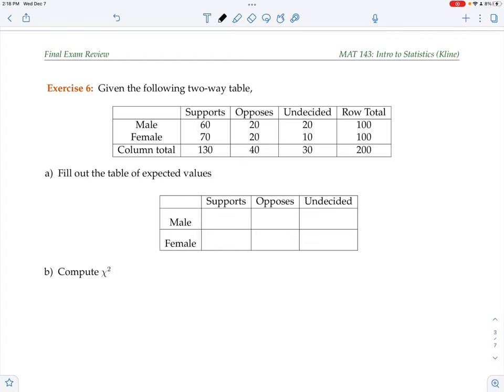I'm going to compute expected values. Remember, for the expected value here, it's row total times column total divided by table total, and you're going to come up with 65. I'm just going to fill these in and you can check those yourself.